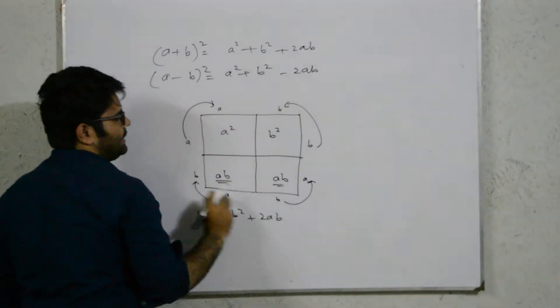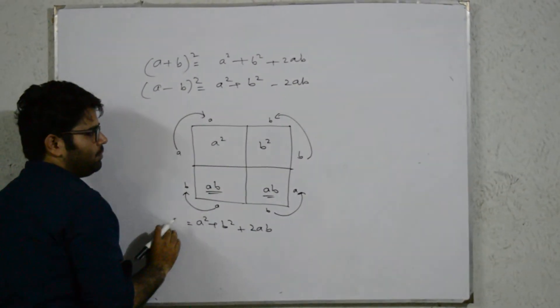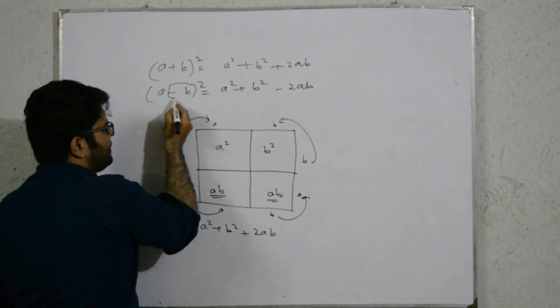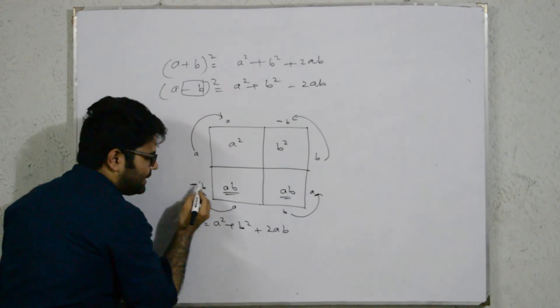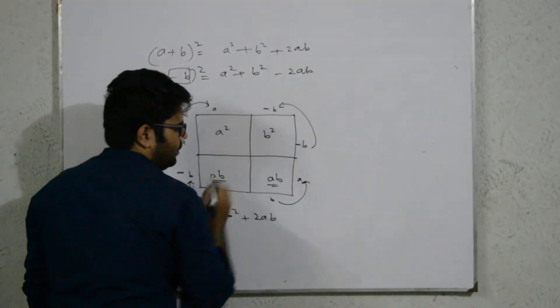So, a squared plus b squared minus 2ab. Now, here we see the same as it is. The same situation. If you have a minus b squared, then you know that b is minus.